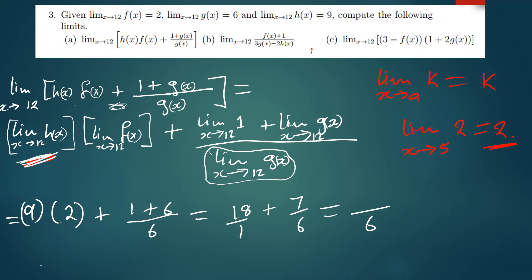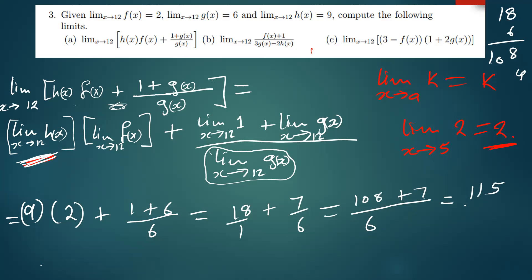Since calculators are not allowed, we simplify on paper. The common denominator is 6. We get 18 times 6 equals 108, then 7 over 6 gives us 7. So 108 plus 7 equals 115, giving a final answer of 115 over 6. If you can reduce this further you may go ahead.